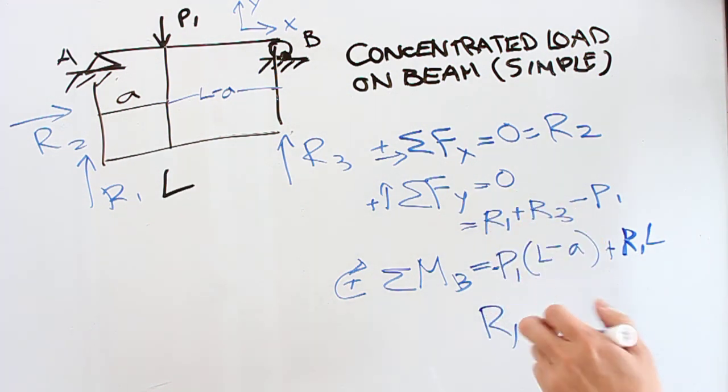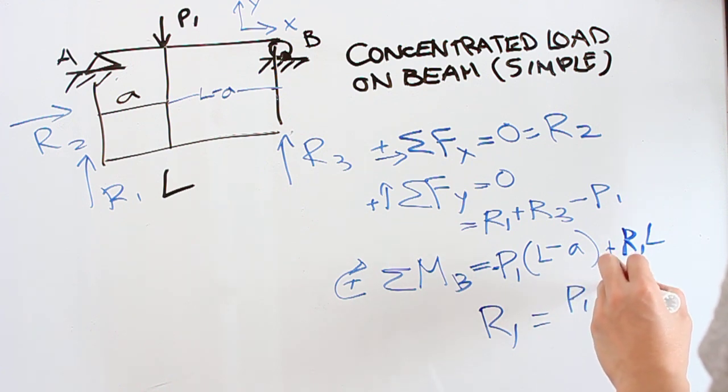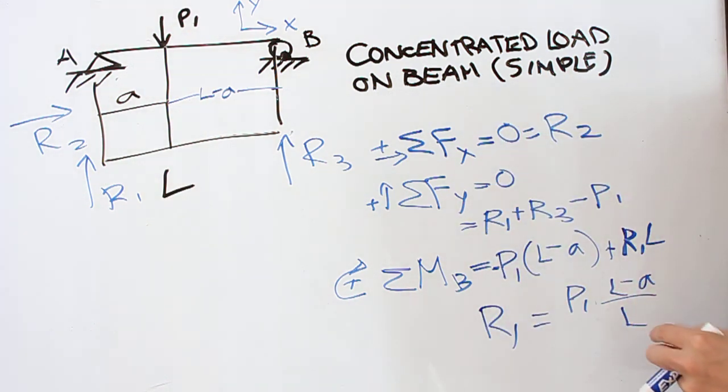And we can use it back in the second equation. R1 is just P1 times the distance variables: L minus a over L. So you notice there's an interesting relationship here, and it's related to P1.